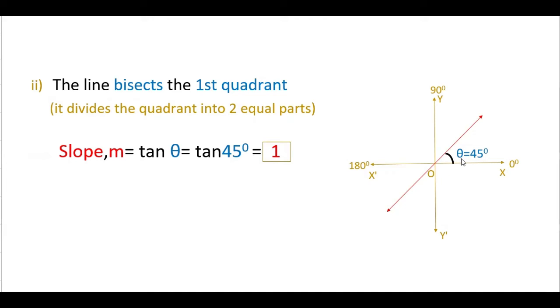So here the slope is you have to find for the angle of 45 degrees. This is the inclination of the line. So slope m is equal to tan θ is equal to tan 45 degrees, that is equal to 1.